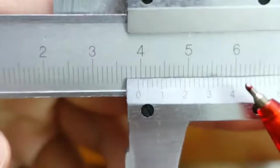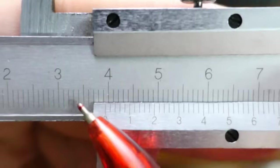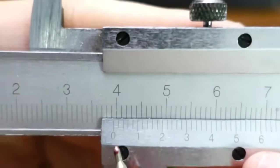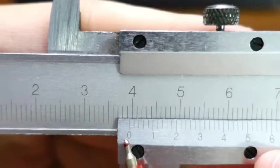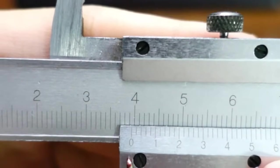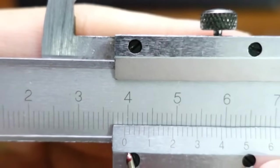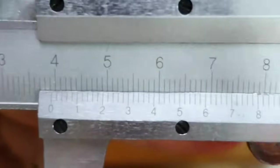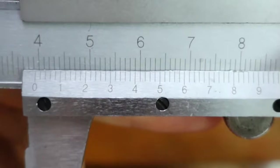I like this camera. I can zoom in so close. So we have to see, okay, where is the 0 pointing at? 3.9. Looks like it. Okay, 3.9. Then you do the challenging part and look at the vernier scale.